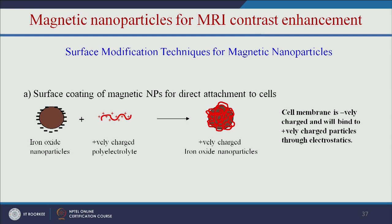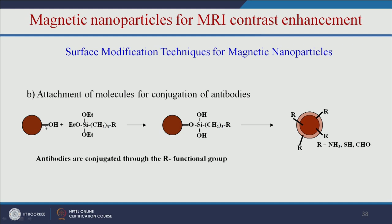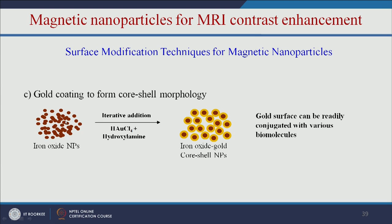We can also use magnetic nanoparticles for MRI contrast enhancement. An iron oxide nanoparticle is usually negatively charged; adding a positively charged polyelectrolyte allows it to bind to the negatively charged cell membrane through electrostatic interaction, enhancing MRI contrast. We can also add antibodies to the iron oxide nanoparticles to specifically bind to cancer cells and improve MRI contrast. Additionally, gold coating can form a core-shell morphology of iron oxide nanoparticles, where the gold surface can be readily conjugated with various biomolecules, providing multiple functions — MRI enhancement from the iron oxide core and additional MRI contrast enhancement from the gold.